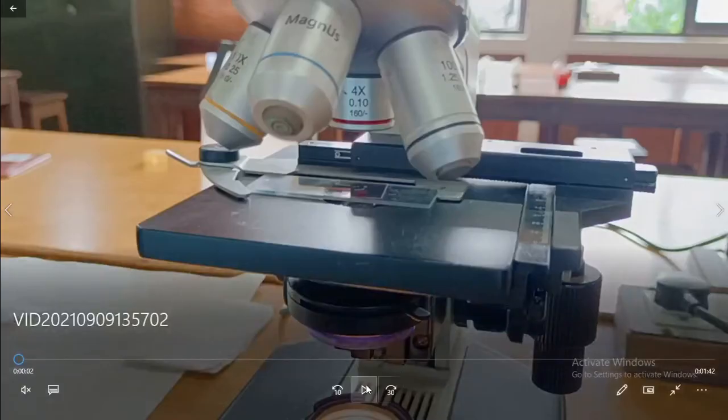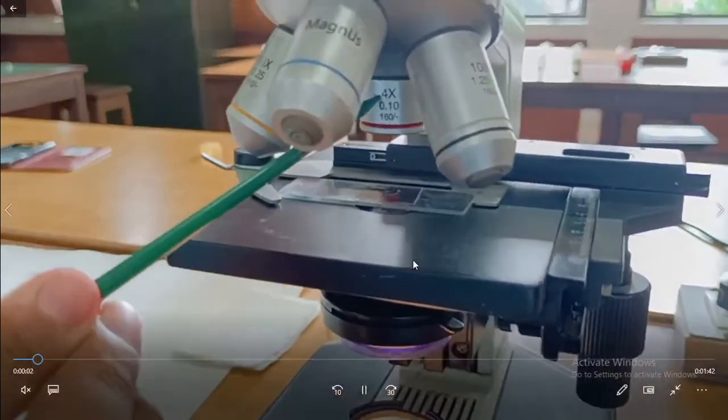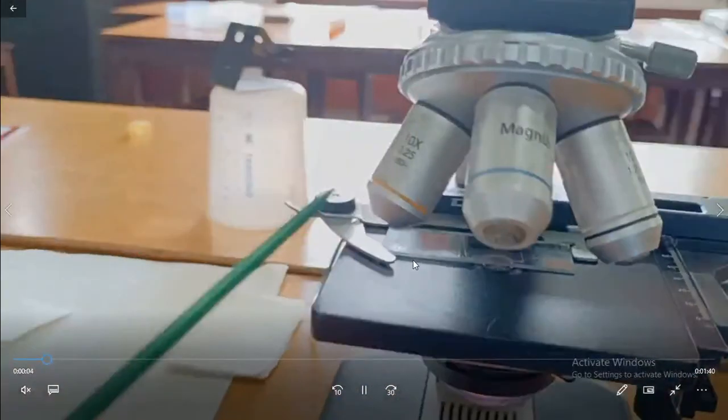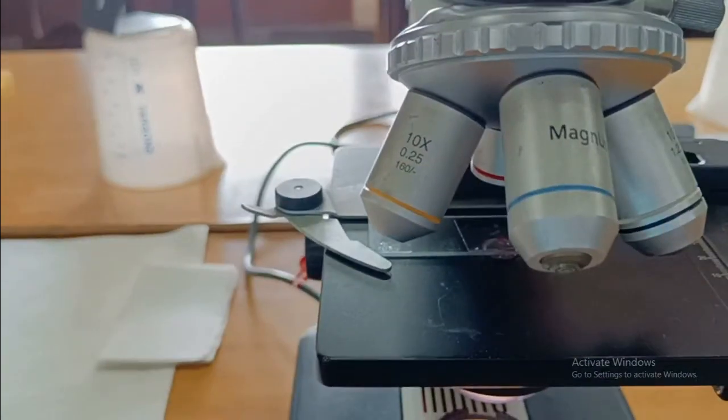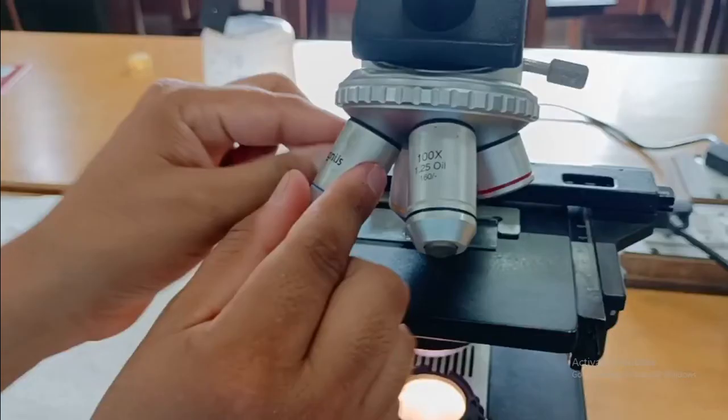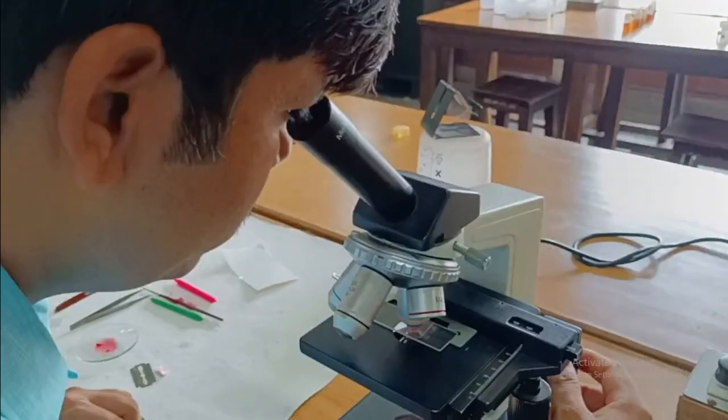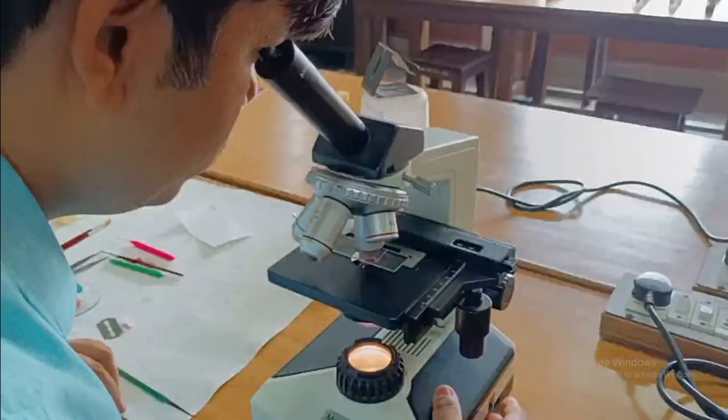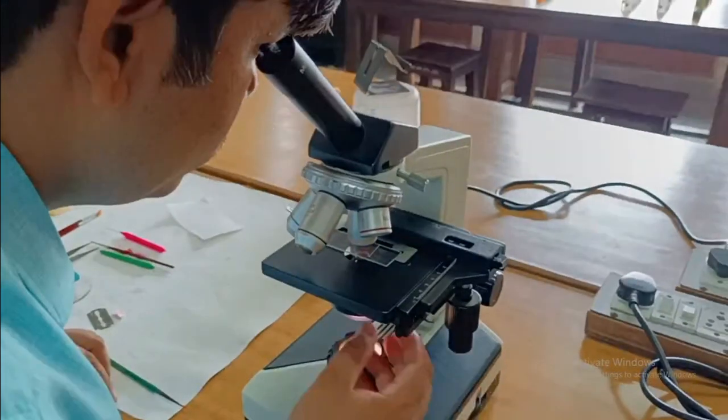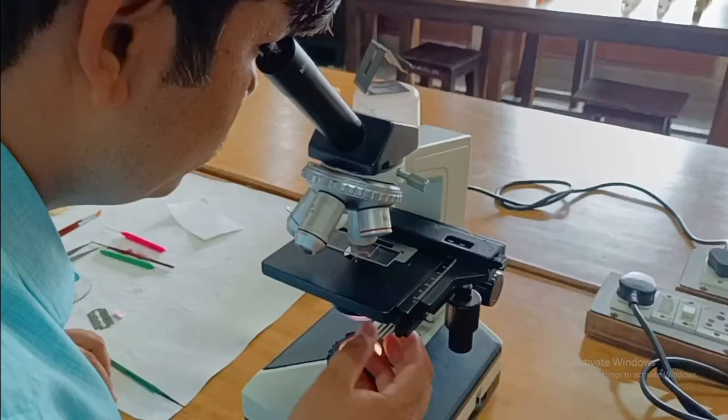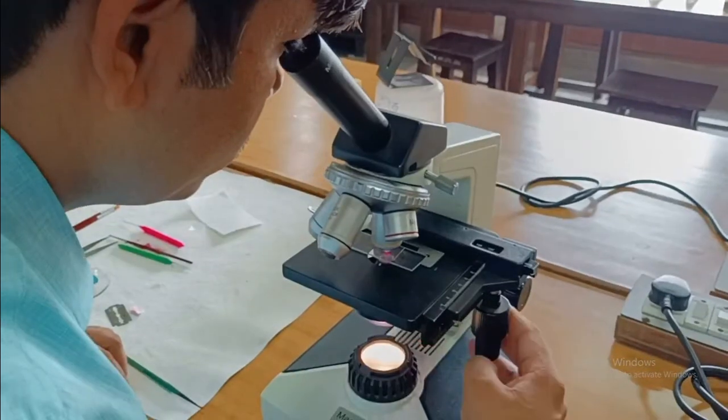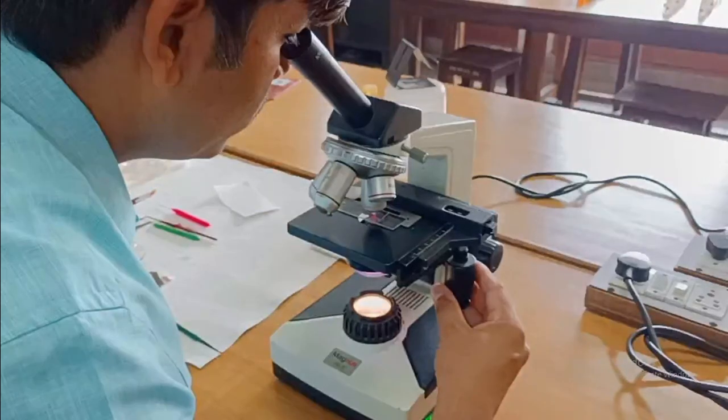Now for better observation, we will try to increase the power of our objective lens. This is the 4x lens and this is 10x lens. Without changing the condition of the stage, we will change the power from 4x to 10x and we will again observe it. Light can be adjusted with the help of the diaphragm.